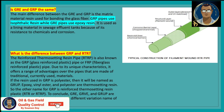Are GRE and GRP the same? The main difference between GRE and GRP is the matrix material — the resin used for bonding the glass fiber. GRP pipes use isophthalic resin, whereas GRE pipes use epoxy resin. GRE is used as a lining material in sewage effluent tanks because of its resistance to chemicals and corrosion.